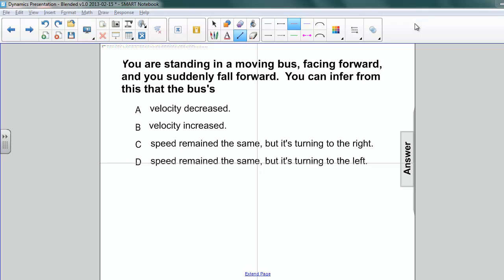Here's our fifth question. You're standing in a moving bus, facing forward, and you suddenly fall forward. You can infer from this that the bus's A, velocity decreased, B, velocity increased, C, speed remained the same but it's turning to the right, or D, the speed remained the same but it's turning to the left.